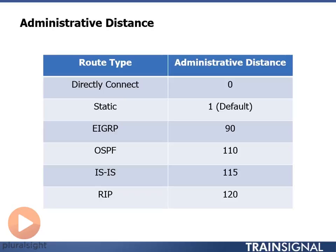For our interior gateway protocols, if we are running multiple routing protocols on our router — and there are definitely situations where you have a need to run multiple routing protocols on your devices — the router needs a mechanism to determine which route is the most trustworthy. So if I'm running OSPF, ISIS, EIGRP, and RIP, and they're all advertising the same networks, which route do I add to the routing table? Well, that's where the administrative distance comes in.